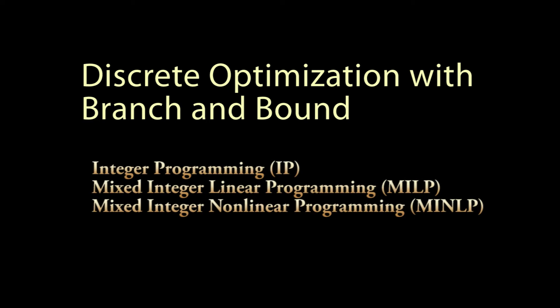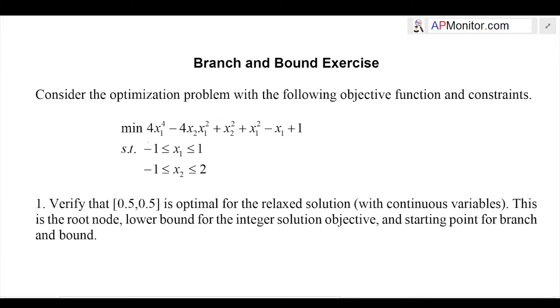This is a tutorial problem on discrete optimization with branch and bound applicable to integer, mixed integer, and mixed integer nonlinear programming. We're going to run through an example problem with a single objective function and two variables with lower and upper bounds.